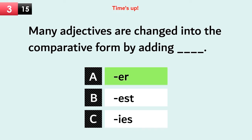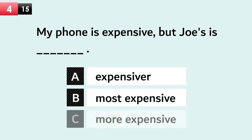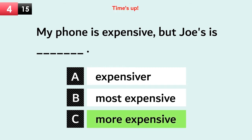Many adjectives are changed into the comparative form by adding -er. For example: My phone is expensive, but Joe's is more expensive.